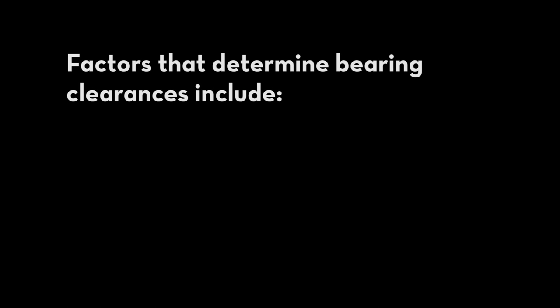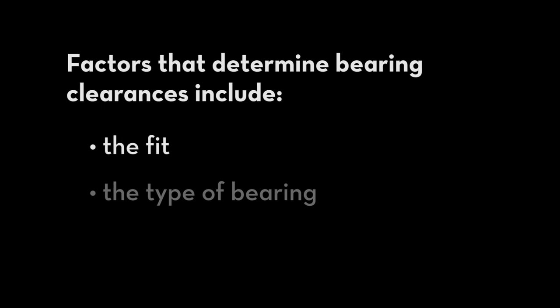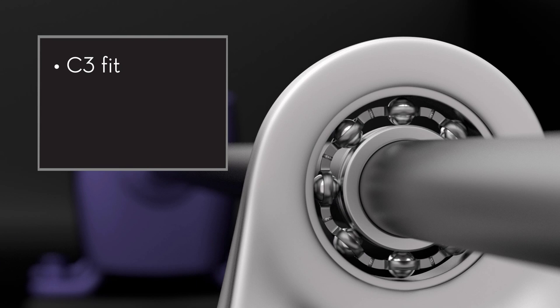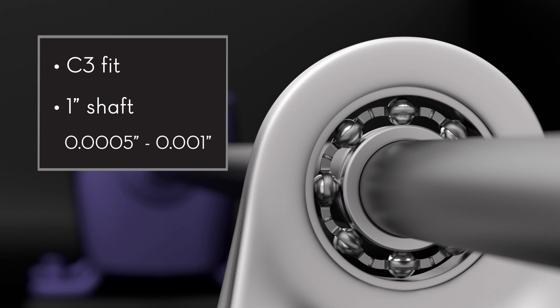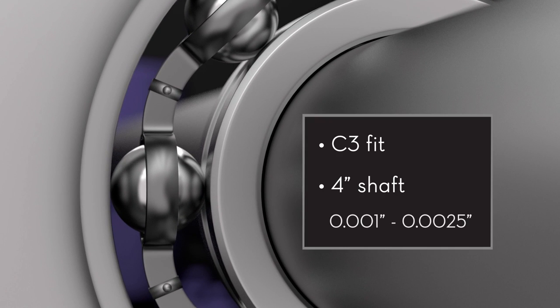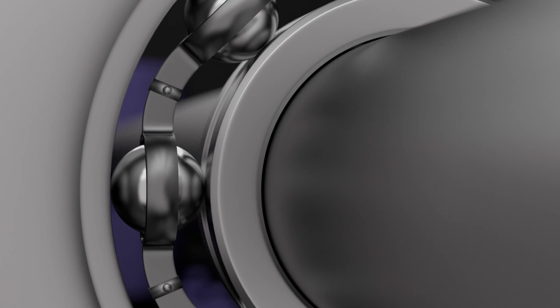Factors that determine bearing clearances include the fit, the type of bearing, and the diameter of the shaft. With a C3 FIT and a one inch diameter shaft, the clearance is between a half a thou and one thou. With a C3 FIT and a four inch diameter shaft, the clearance is much larger, between a thou and two and a half thou.